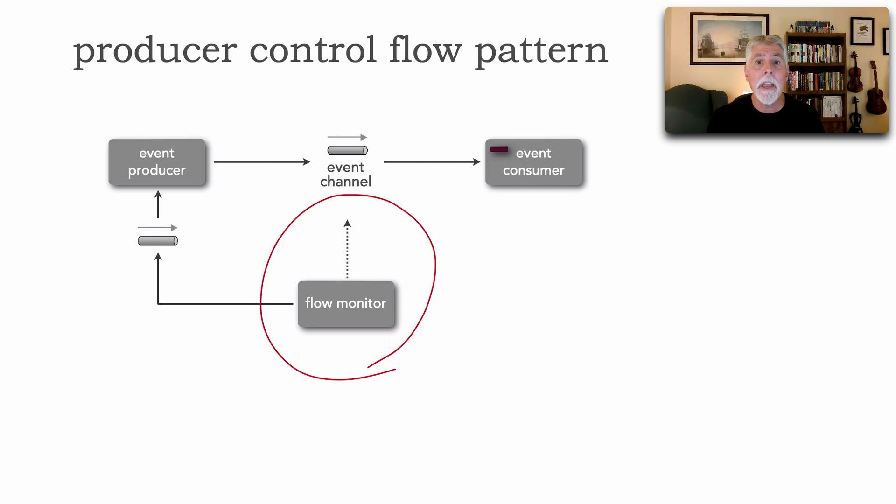Now the responsibility of the flow monitor is to monitor particular event channels and look for delays. In other words, the queue depth, the number of pending messages is getting too large. The flow monitor waits for some sort of upper threshold. In our case it's going to be six messages. I know that's pretty low. Usually it's in the thousands, but that would fill up my screen. So we'll just do six messages.